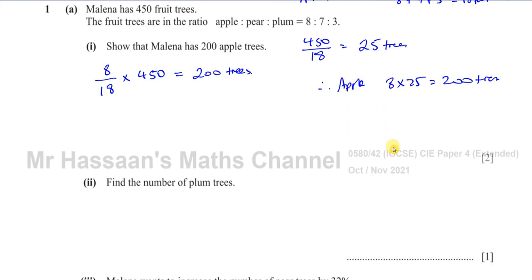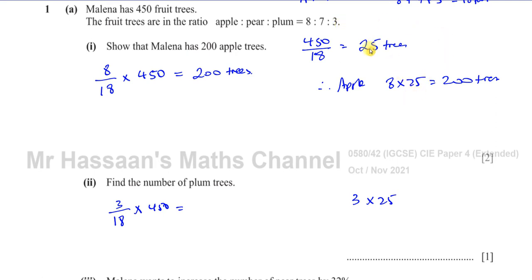Then it says find the number of plum trees. Plum trees make up 3 parts out of 18 of 450, or you can say the plum trees are 3 times 25 because it's 3 parts out of the 18 parts. Each part is worth 25, so 3 times 25 is 75 — so 75 trees.